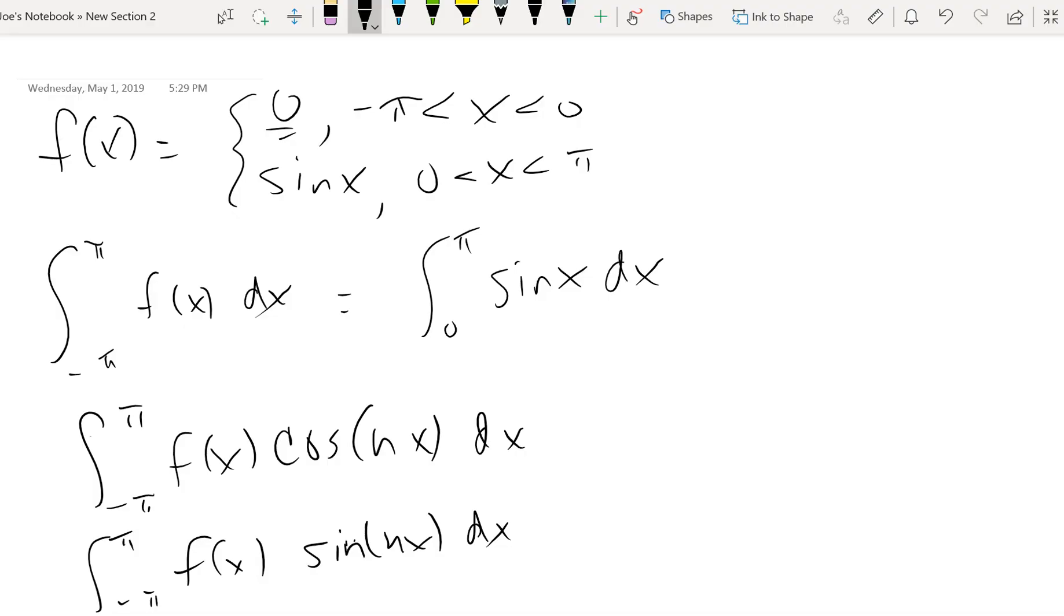Alright, so let's do another example where we're actually going to compute a series of constants value using a Fourier series. So I've written a piecewise defined function here. We've got the function is 0 from negative π to 0 and the function sine x from 0 to π.